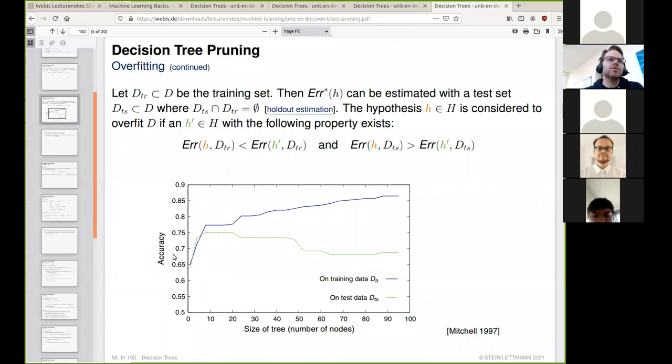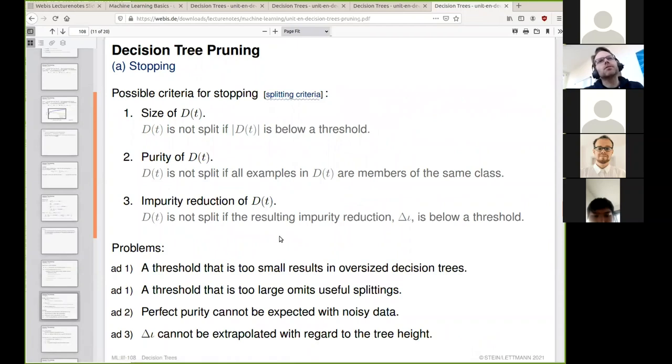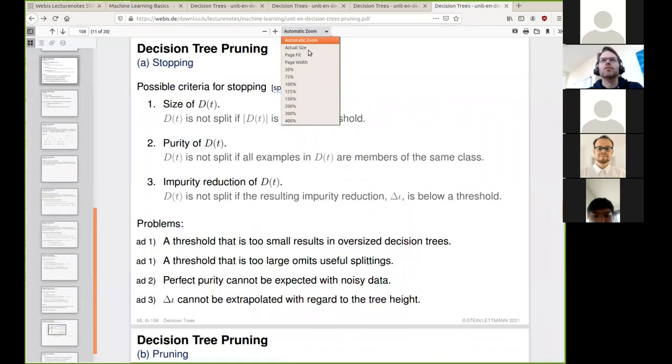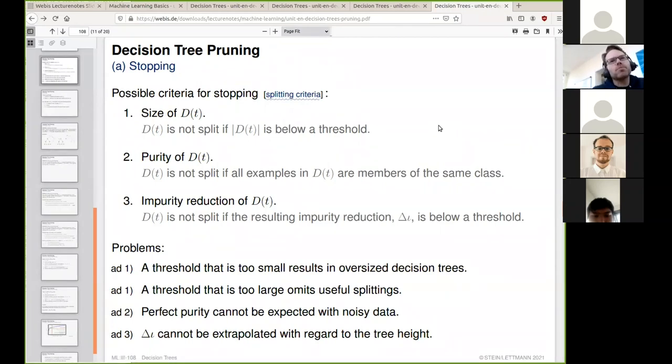To make the decision of stopping, we need a criterion. We might say we stop continuing the splitting if the size of a subset we are currently considering is below a certain threshold. But there's a problem: if we set the threshold too small, we get very large decision trees. If we set the threshold too large, we might miss other useful splittings.